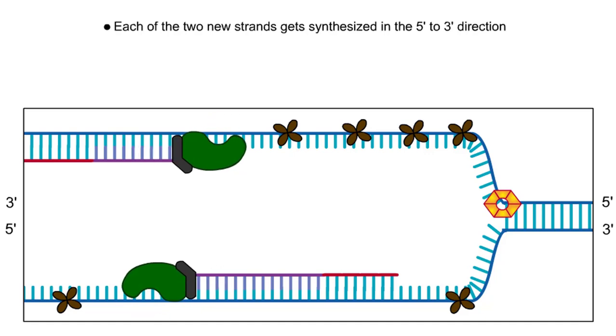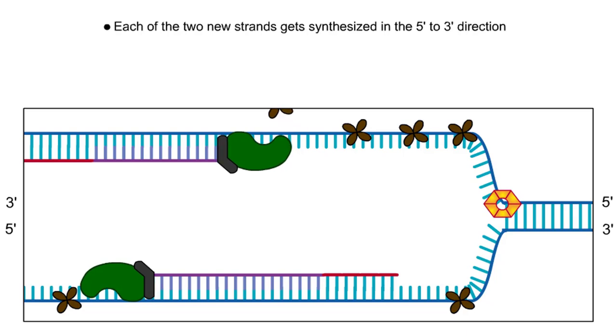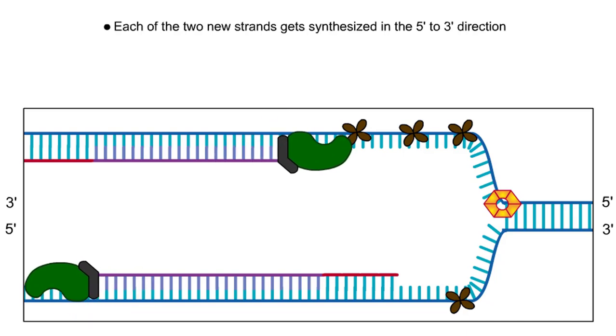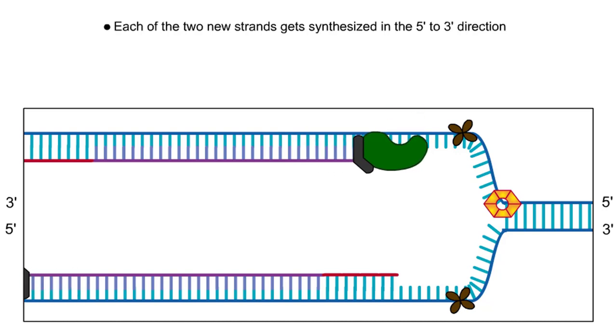Two polymerase enzymes are required, one for each parental DNA strand. Due to the anti-parallel nature of the DNA strands, however, the polymerase enzymes on the two strands start to move in opposite directions.